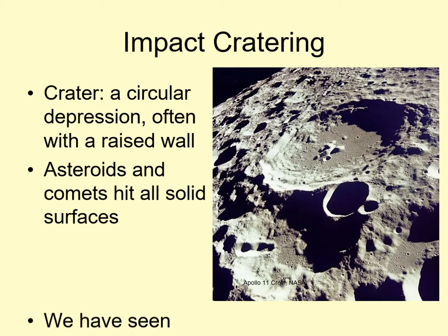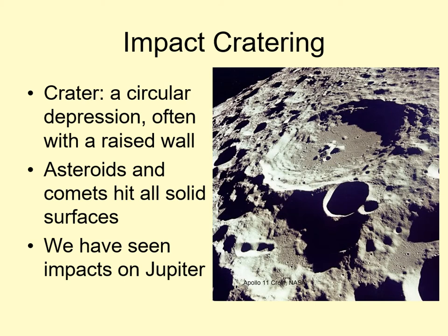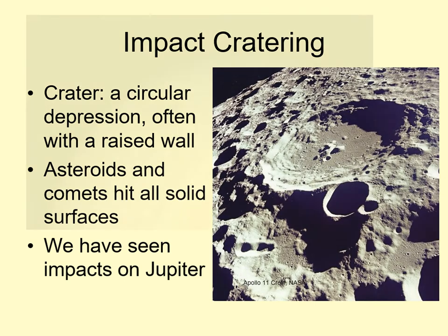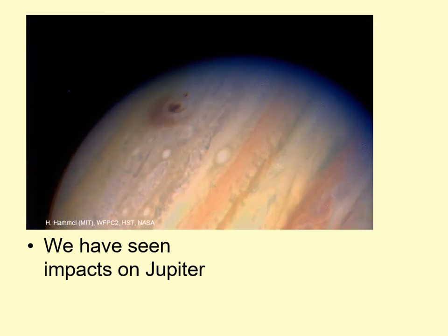Back in 1994, we actually watched pieces of a comet hitting a planet. Unfortunately, the planet was Jupiter, so it didn't produce any craters, since there isn't a solid surface for the crater to exist on. However, it did leave black debris in Jupiter's atmosphere for a while after the impacts. This event did illustrate the importance of the energy of the impactor, so we'll look at that next.